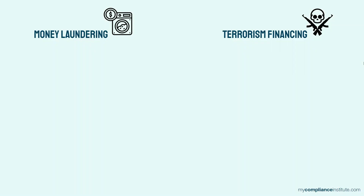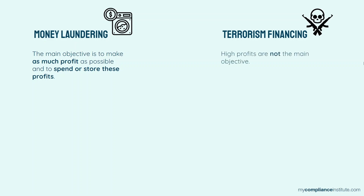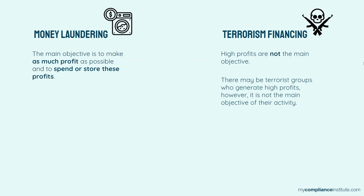Next, the main objective of criminals involved in money laundering is to make as much profit as possible and to spend or store these profits. While for terrorism financing, high profits are not the main objective. There may be terrorist groups involved in activities that help them generate high profits; however, it is not the main objective of their activity.